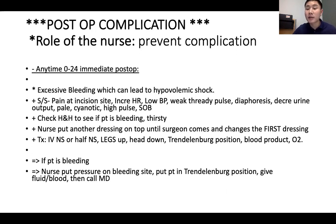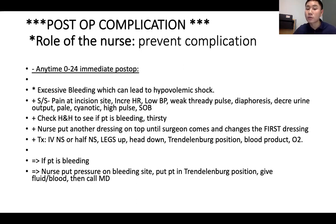Signs and symptoms of post-op bleeding include pain at the incision site, increased heart rate, low blood pressure, weak and thready pulse, diaphoresis, decreased urine output, pallor, cyanosis, and shortness of breath. Increased heart rate and low blood pressure are classic signs of hypovolemic shock. Decreased urine output occurs because the kidneys can't filter blood without enough volume. Urine output should be at least 30 mL/hr — notify the doctor if less than that.